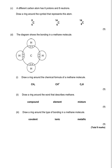We're told this part is about a different atom of carbon — one that has six protons and eight neutrons. Draw a ring around the symbol that represents this atom. Remember, protons give us the atomic number, so it's going to be one of the two options with atomic number six. Then six protons plus eight neutrons equals a mass number of 14 — that's the relative atomic mass. So it can't be the one on the left, which would only have a mass of eight, and so the answer is the middle one.